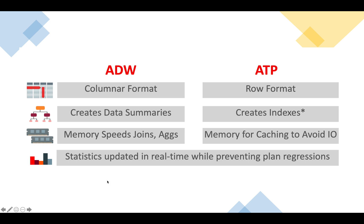Stats gathering is pretty much similar in both services — statistics are updated in real time while preventing plan regressions. Regardless of which autonomous database service you use, optimizer statistics will be automatically maintained. However, on ADW, stats including histograms are automatically maintained as part of bulk load activities — when you perform a bulk load on your data warehouse, stats are gathered at that time. In ATP, since data is added using more traditional insert statements, stats are gathered differently.